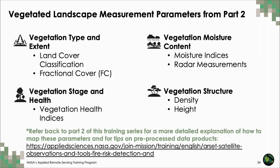Moving on to other methods we can use to assess vegetation regrowth — we've already covered quite a few. In part two of this series, we went over a variety of ways to assess vegetation type, extent, stage, health, structure, and moisture. For this session, we're going to focus on the use of land cover classification and vegetation indices to map regrowth, though many parameters from session two are also helpful for characterizing vegetation at the post-fire stage.